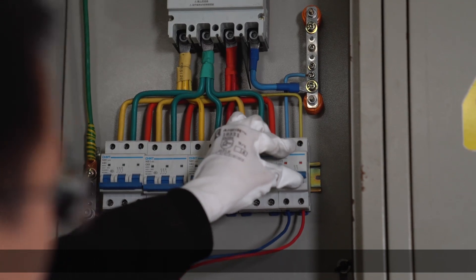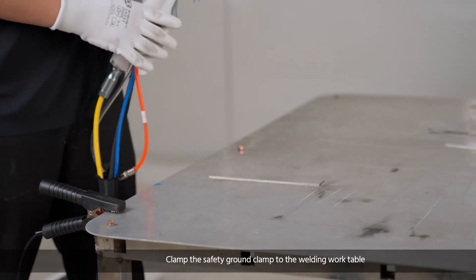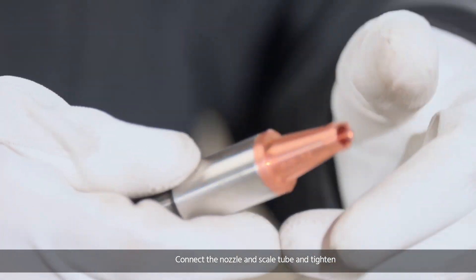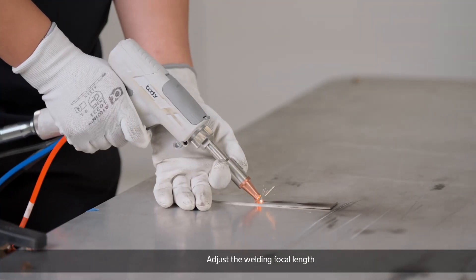Turn on the power. Clamp the safety ground clamp to the welding work table. Connect the nozzle and scale tube and tighten. Adjust the welding focal length.